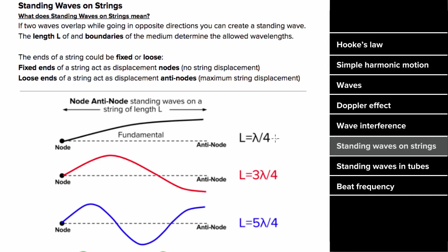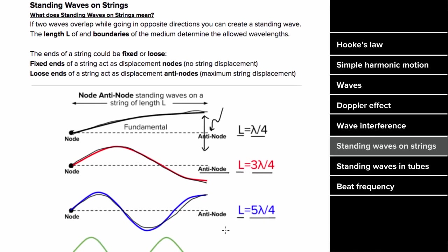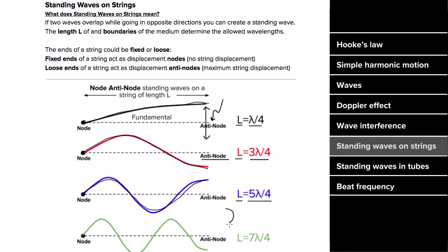If one end of the string is loose, that end becomes an antinode. The fundamental standing wave takes the shape of one-fourth of a wavelength, going from a node to an antinode, so the string length equals one-fourth of a wavelength. The next possibility is three-fourths of a wavelength, then five-fourths — this progression of odd-integer multiples of lambda/4 keeps going.